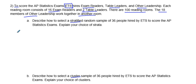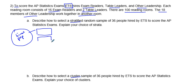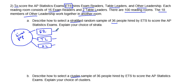ETS has all these hires — that's our population. This population is made up of three distinct types of people, so it makes sense to group them: exam readers, table leaders, and other leadership. We are trying to get a sample of 36 people, so we could take a random sample from each one of these strata — these would be our groups. We would take a random sample of 12 people from each group, giving us a diverse and representative sample.